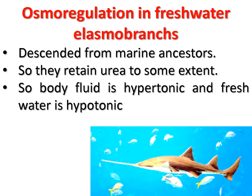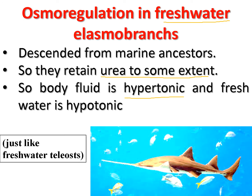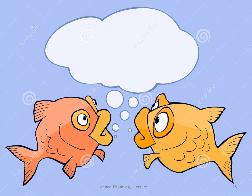Freshwater elasmobranchs descended from marine ancestors, so they also retain urea to some extent. As a result, body fluid is hypertonic and freshwater is hypotonic, so the same mechanism as freshwater teleosts applies — endosmosis occurs.